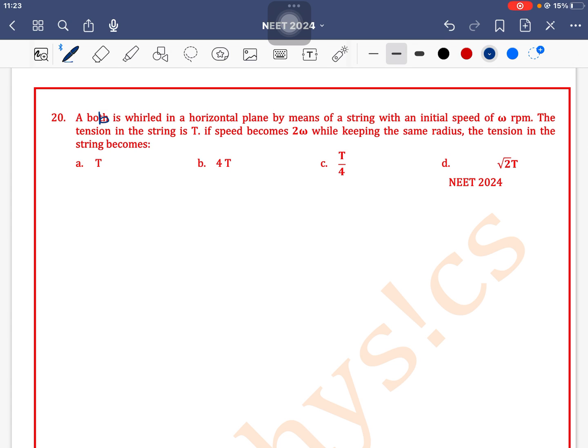Now we are rotating a bob in a horizontal circle. So let's say the bob is here having mass m and it is connected to a string. As the bob is performing circular motion, this is centripetal force. The force which is directed towards the center of the circle is called centripetal force. So here tension provides centripetal force.